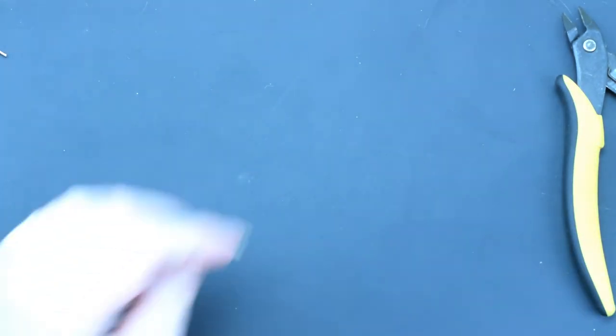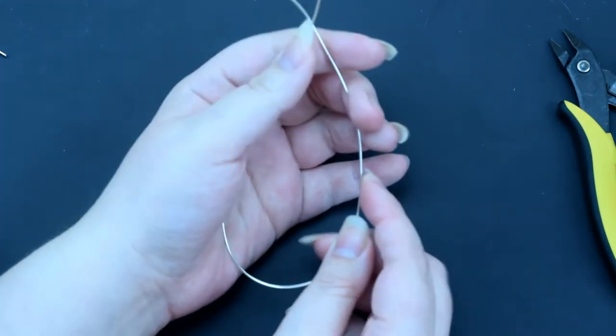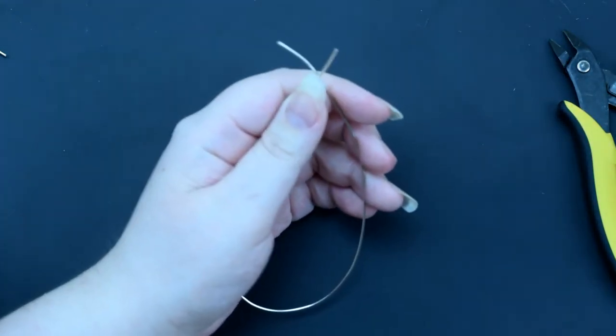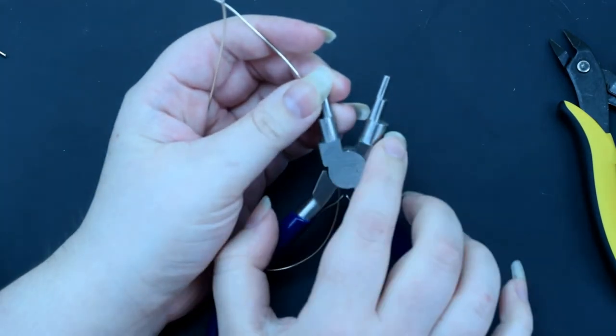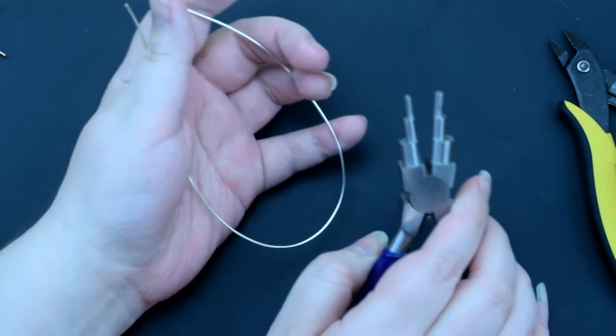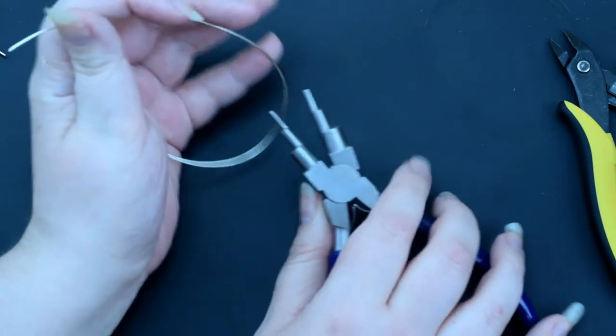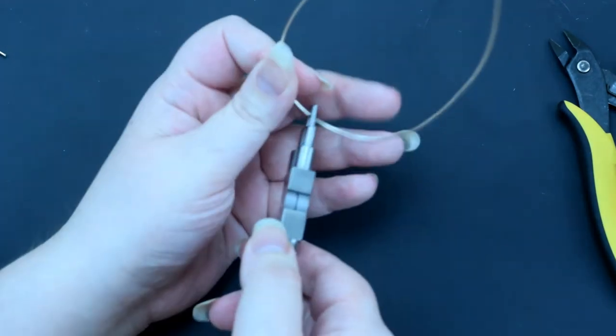So what we're going to do to begin with is find the halfway point. I am going to be using my bail making pliers because I want these specific steps so that I can keep to the same sizes. You of course can use normal pliers, but I would suggest trying to keep them to the same size.